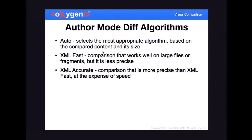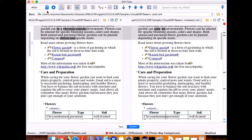The algorithms used for the author mode comparison: we have two algorithms. The XML fast algorithm works better on large files but is not so precise. You can also use XML accurate, which is more precise but at the expense of speed — for large documents it takes longer to compare. We automatically select the appropriate algorithm depending on the type of document and its size and complexity. By default, this auto mode is selected and the algorithm being used is presented in the status bar, but you can change it from the combo. You can also configure it from the options if you want to always use XML fast or always XML accurate.